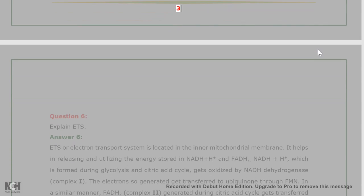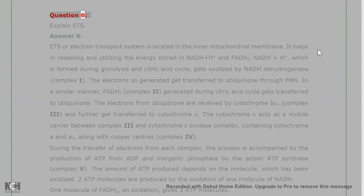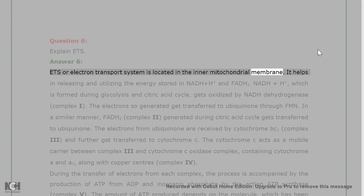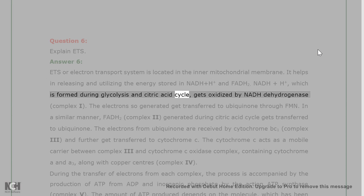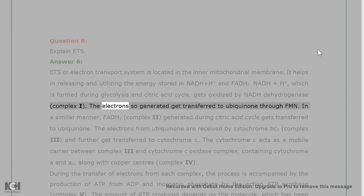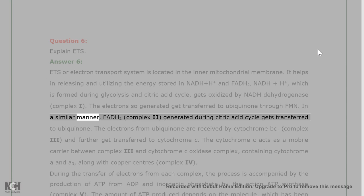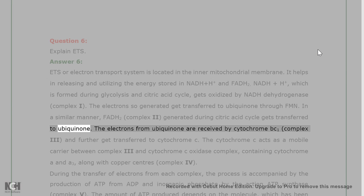Question 6: Explain ETS. Answer 6: The electron transport system (ETS) is located in the inner mitochondrial membrane. It helps in releasing and utilizing the energy stored in NADH₂ and FADH₂. NADH₂ formed during glycolysis and the citric acid cycle gets oxidized by NADH dehydrogenase (Complex I). The electrons generated get transferred to ubiquinone through FMN. Similarly, FADH₂ (Complex II) generated during the citric acid cycle also gets transferred to ubiquinone.